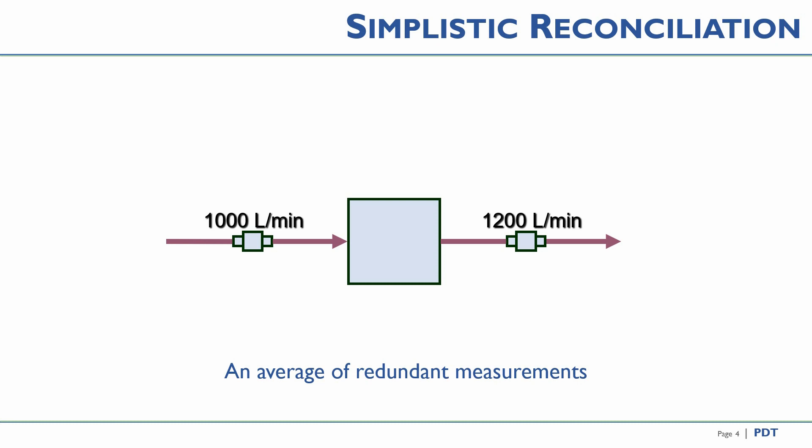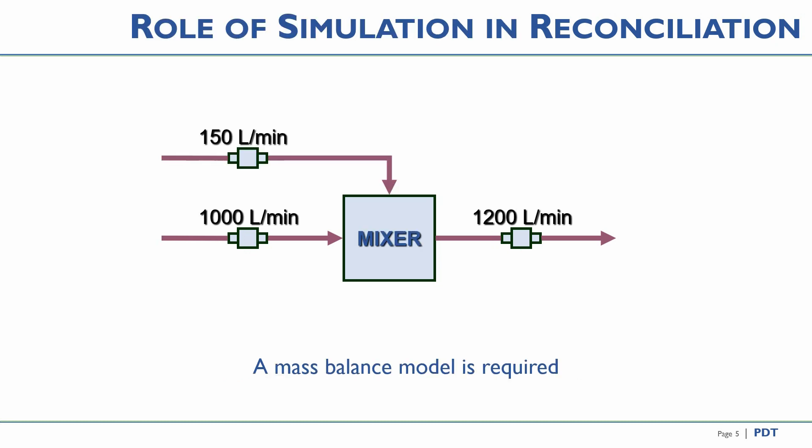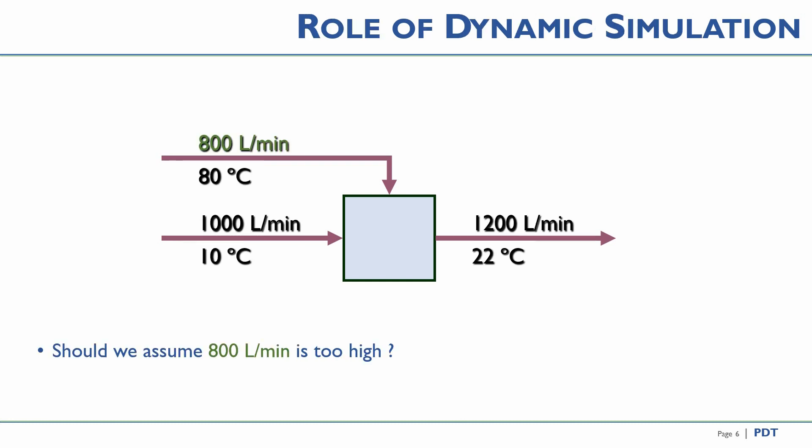So how does data reconciliation work? In this example, if we had two measurements and we trusted them equally, we might average the flows to give 1100 liters a minute. You cannot take these three flows, add them up, and divide by three to get a sensible answer. However, a mass balance model understanding what flows are input might suggest the net throughput is somewhere between 1150 to 1200. Conventional methods would suggest that a feed of 800 liters a minute here is too high, as a flow of 200 would give an exact flow and temperature balance.